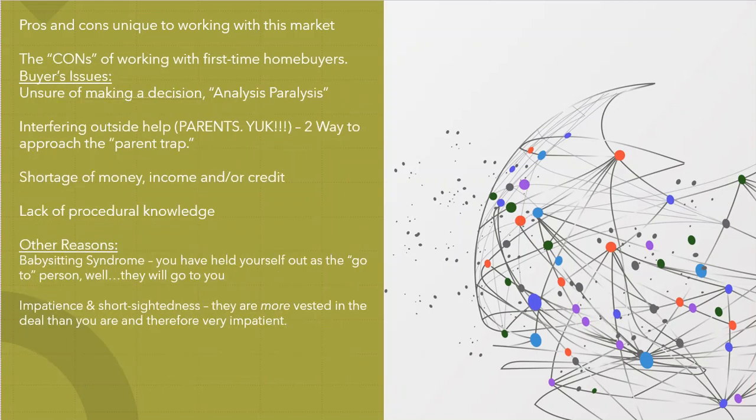Now, let's talk about the downside or the cons to working with first time homebuyers. A lot of first time homebuyers go through what's called analysis paralysis. They really can't make a decision. They are so inundated and overwhelmed with the number of homes, the number of choices, the process. That's where you've got to step in and try and cut through all the chaff and get to the wheat.